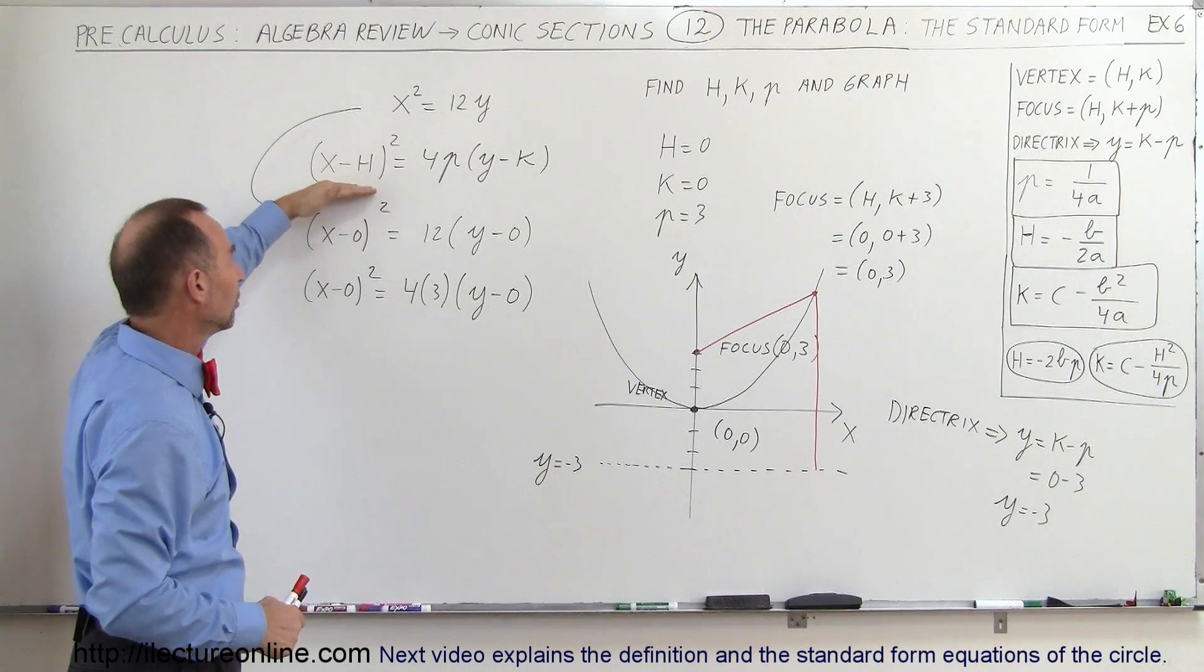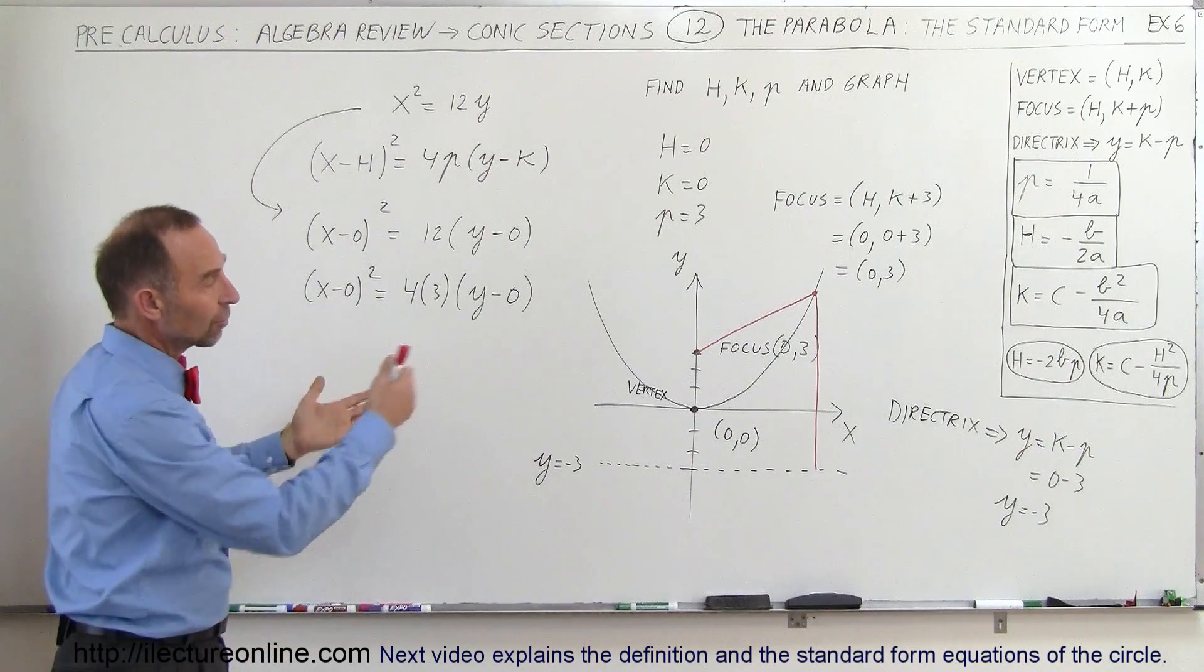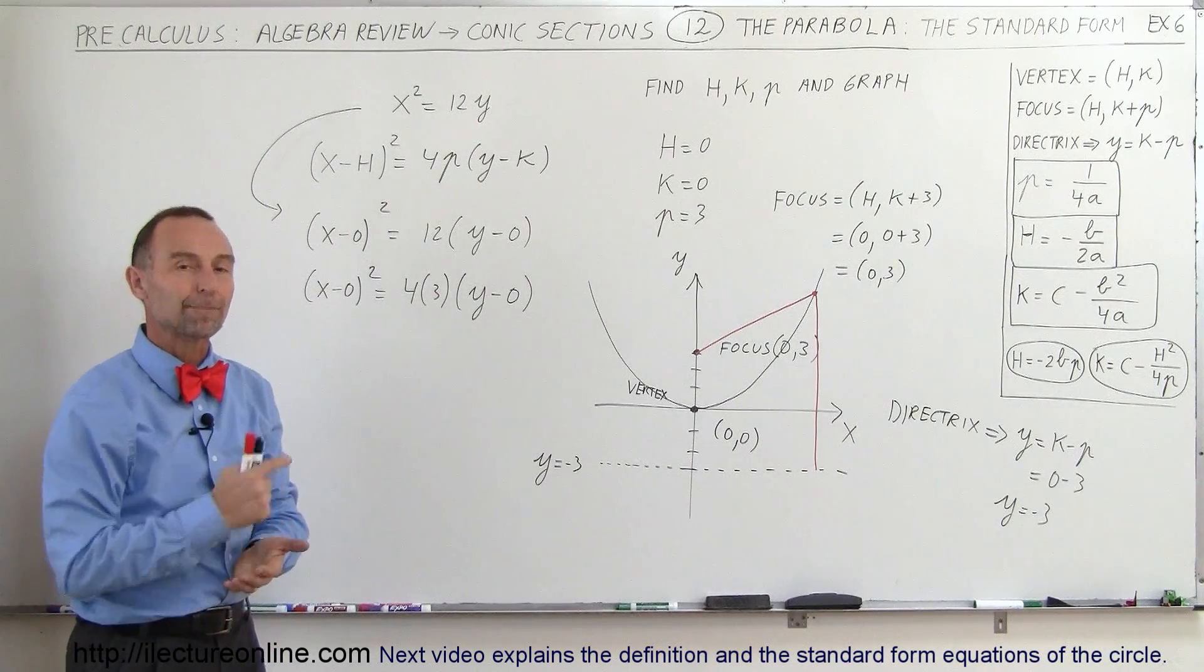And thus, using the standard form to graph a parabola, even if it's given to us in a very simplistic equation like that. Again, go back to the standard form, make this look like that, and then you find your h, your k, and your p, and then you can graph it fairly easily. And that's how we do that.